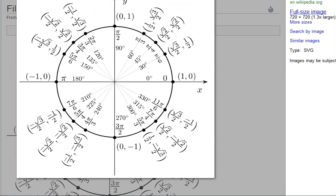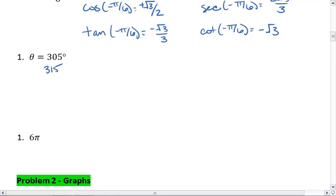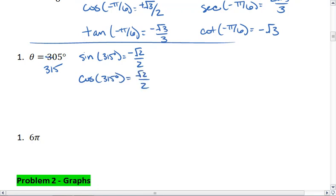When theta is 315°, sine is negative √2 over 2, cosine is √2 over 2. Then tangent is negative √2 over 2. Well, it's actually going to reduce down to 1, but in this case it's negative 1, because sine and cosine are the same value, but sine is negative whereas cosine is positive.